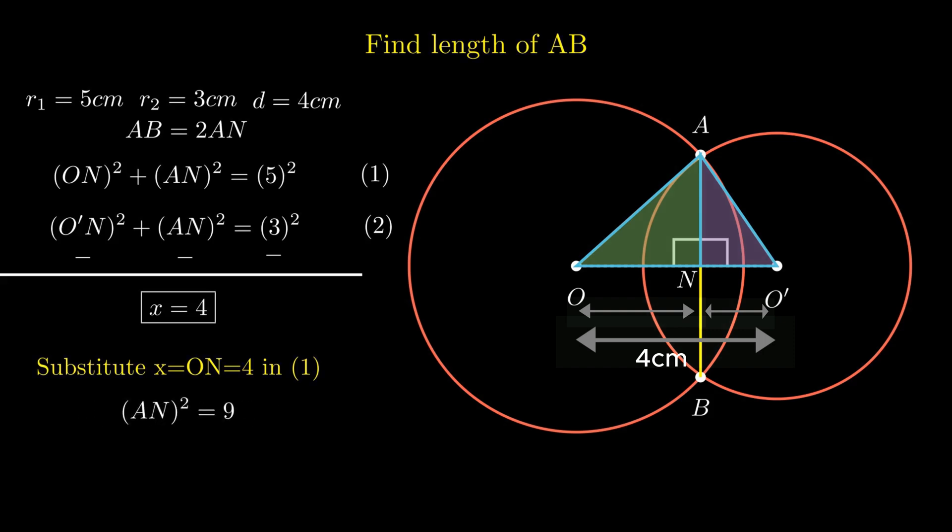On simplifying AN square equals 9, we get AN as root of 9, which on further simplification gives us AN equal to plus minus 3. As sides can't be negative, therefore, rejecting minus 3, we conclude AN as 3.